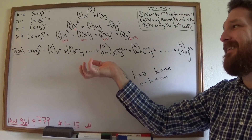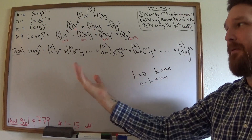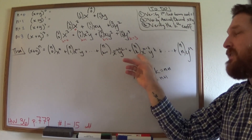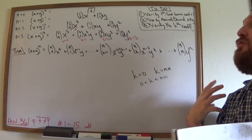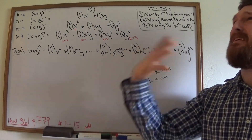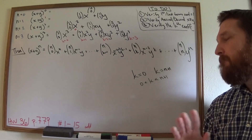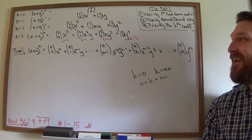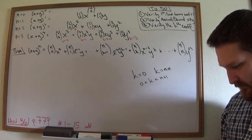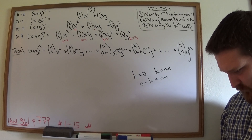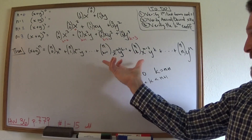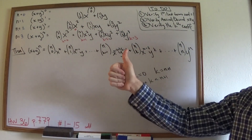The inductive step: assume the formula is true for n, and show it holds for n+1. We're not introducing a separate variable for the induction index because n already appears in 'n choose k.' This is why I'm not assigning this proof as homework — there's a lot going on with two variables.